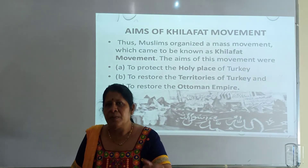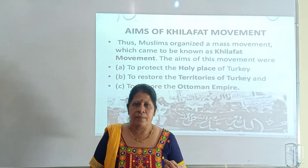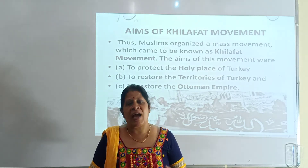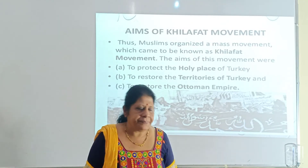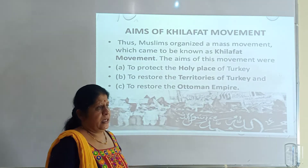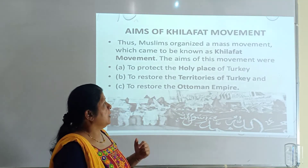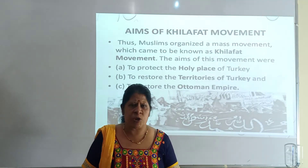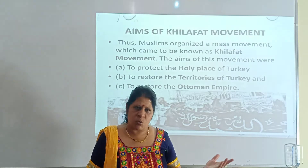Two brothers, Muhammad Ali and Shaukat Ali, came to Gandhiji with a proposal that they wanted to start a nationwide movement against the British government so that, if successful, they could restore the lost position of the Khalifa and the territories back to Turkey. These Ali brothers initiated the Khilafat Movement and asked Gandhiji if they could together pressurize the British government to do something for the Khalifa.